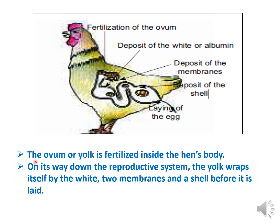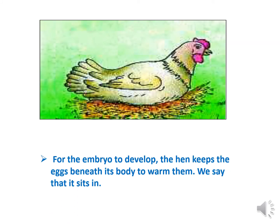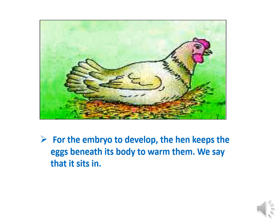This is the reproductive system of a hen. As the egg travels down the reproductive system, the yolk surrounds itself with the white, then with two transparent membranes. At last, it is surrounded by a shell before it is laid.